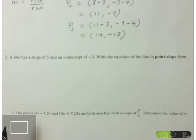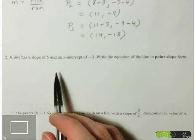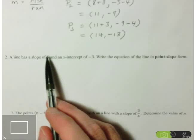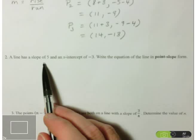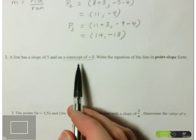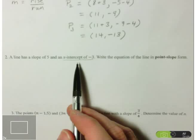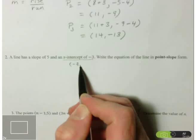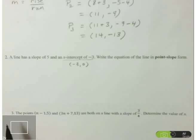Now we go to question 2. A line has a slope of 5 and an x-intercept of negative 3, and they want us to write the equation in point-slope form. To use slope-intercept form we'd need the slope and another point. They don't give us a point explicitly, but the x-intercept of negative 3 means the line crosses the x-axis at negative 3. When you're on the x-axis, the y value is 0 — so implicitly we have the point (-3, 0).